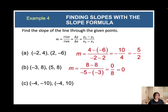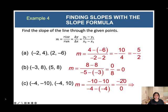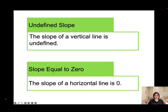The slope of part b is zero, and the slope of the last one is negative 20 over 0, which is undefined. When the slope is undefined, you have a vertical line. When the slope equals zero, you have a horizontal line. Highlight this: undefined slope means the line is vertical; slope equal to zero means the line is horizontal.